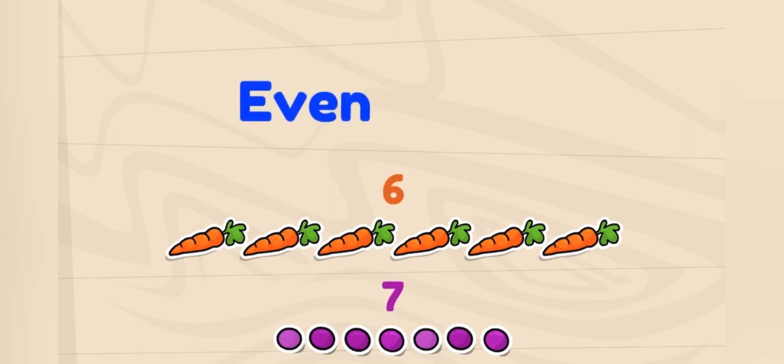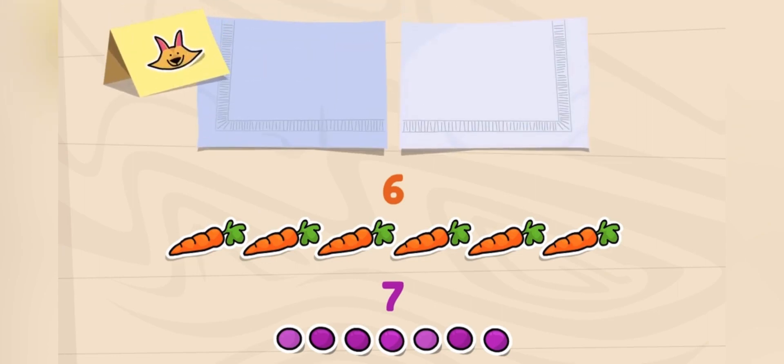Even means that it can be divided into two equal groups. Odd means that it cannot. I'll see if I can give an equal number to my friends, Sandy and Cody.